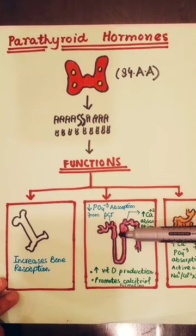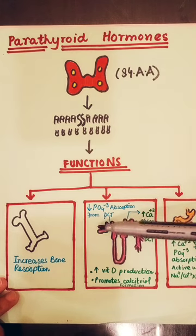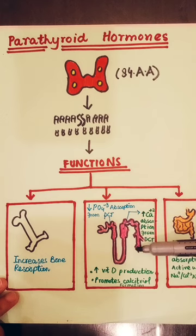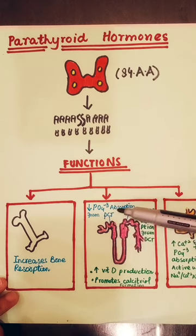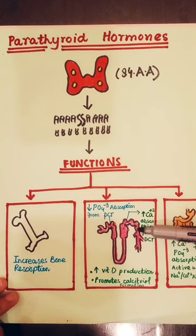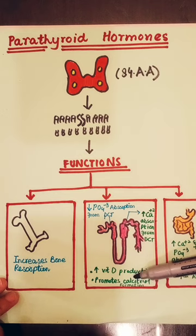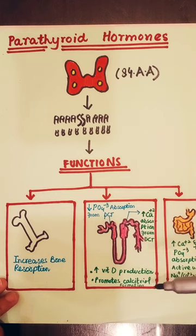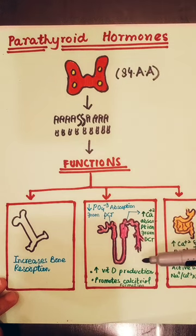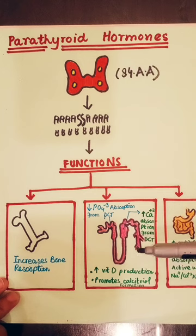At the kidney level, the nephron includes the glomerulus, Bowman's capsule, proximal convoluted tubule, descending loop of Henle, distal convoluted tubule, and collecting ducts. The role of parathyroid hormone at the kidney is that it decreases phosphate absorption from the proximal convoluted tubule and increases calcium absorption from the distal convoluted tubule. It also increases vitamin D production and promotes calcitriol function. The most important part of activated vitamin D is by hydroxylation in the kidney to form calcitriol.